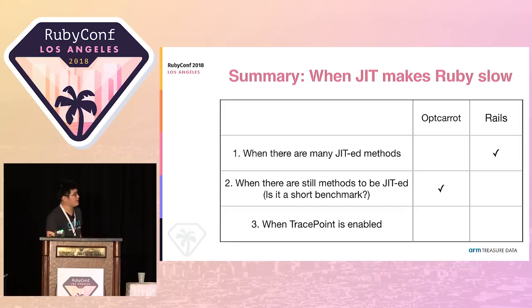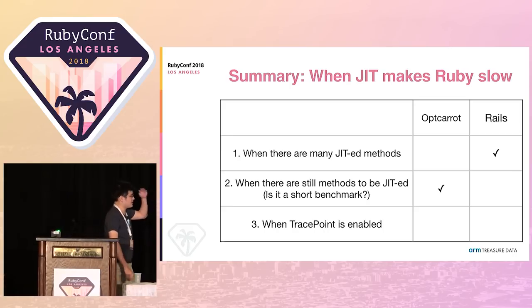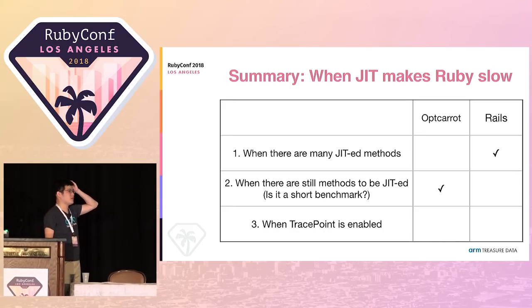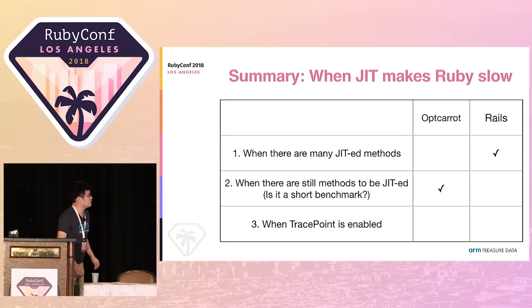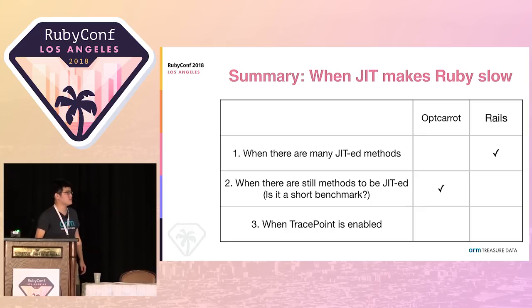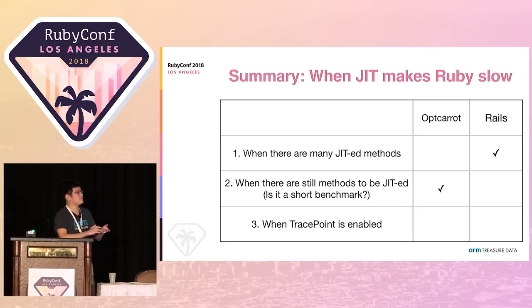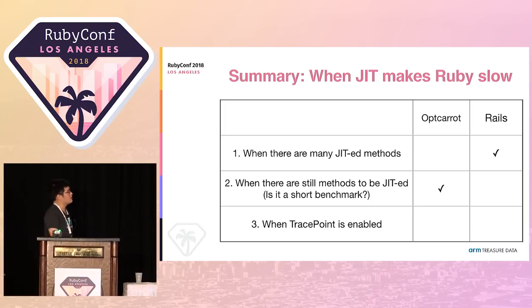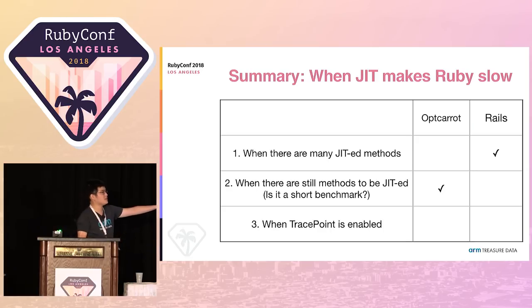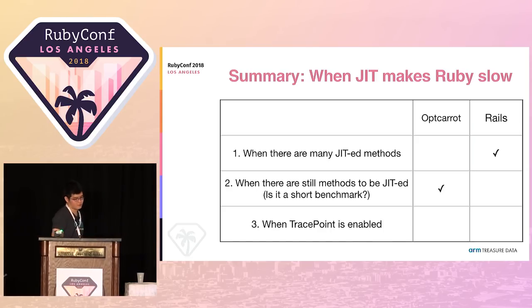In summary, there are three situations that may make Ruby slow with JIT. In OptCarrot, it's a short benchmark that runs within about one minute, so it doesn't trigger JIT compaction because it doesn't reach 1,000 methods. It is pressured by having methods still to be JITed. But in Sam's Rails benchmark, he compiled 10,000 methods, which puts a lot of pressure. OptCarrot could achieve very good results because the downsides are overcome by the benefits of the JIT compiler.